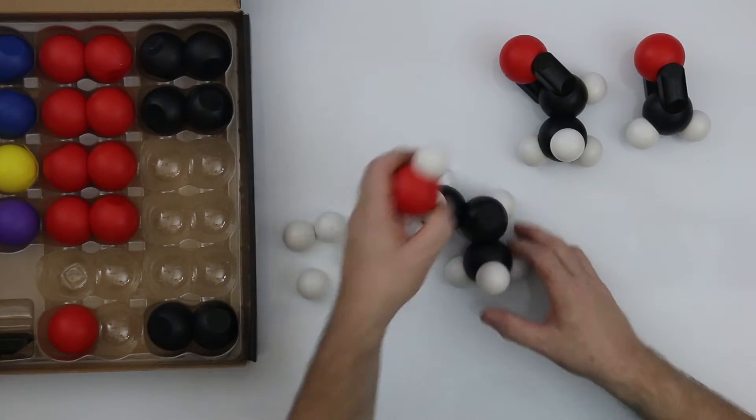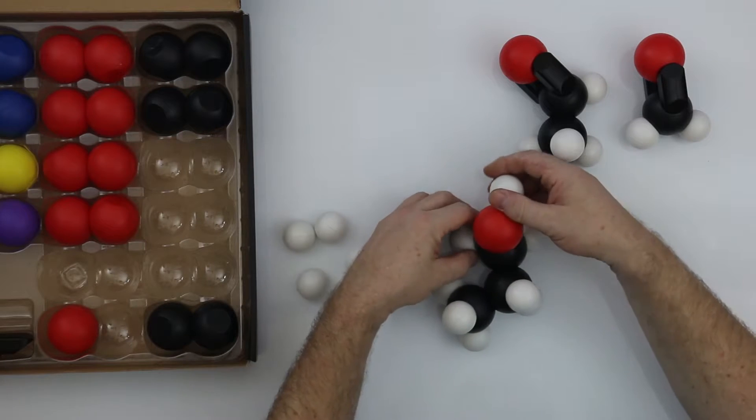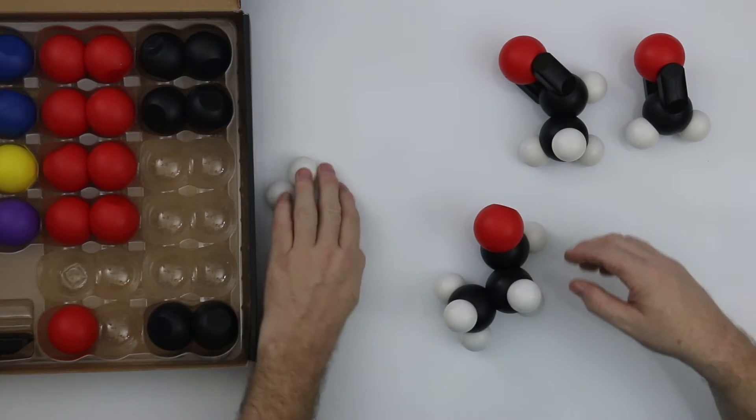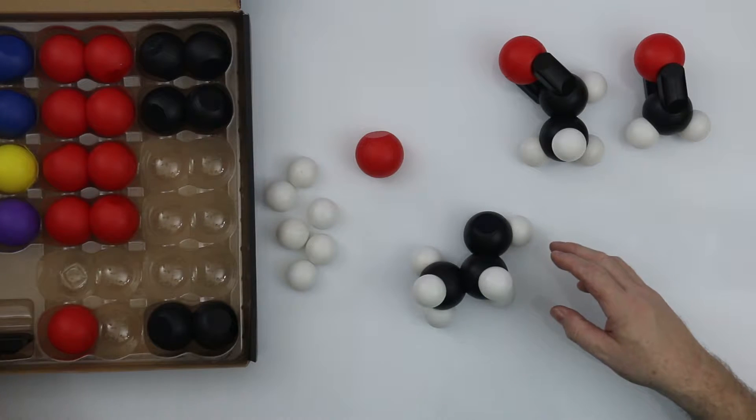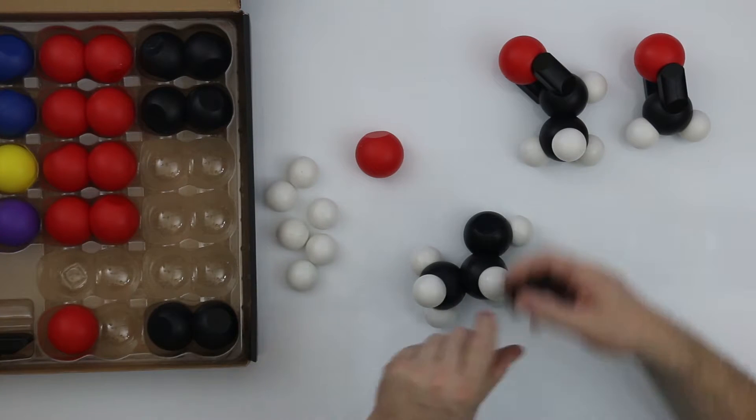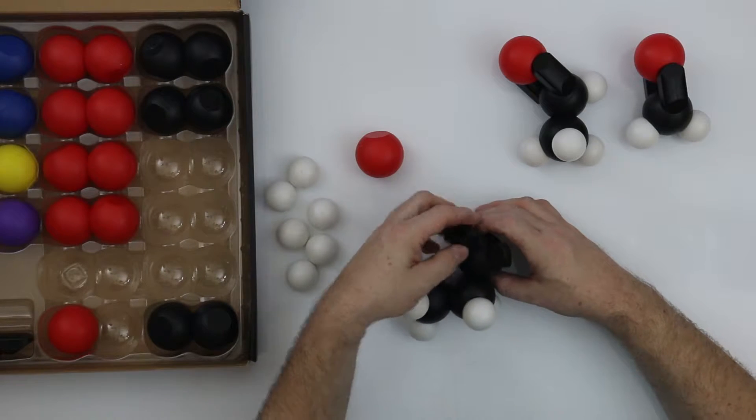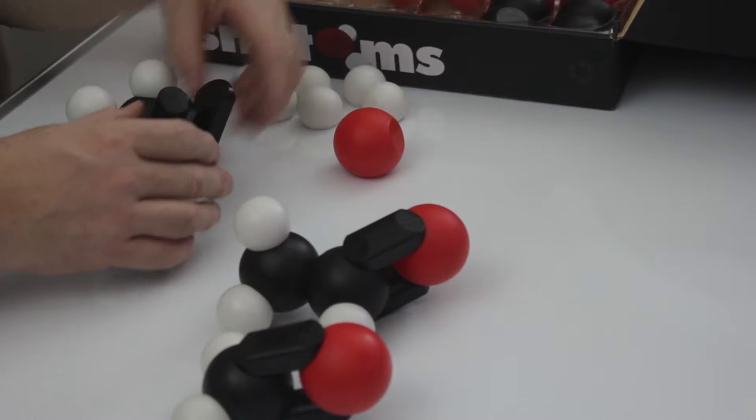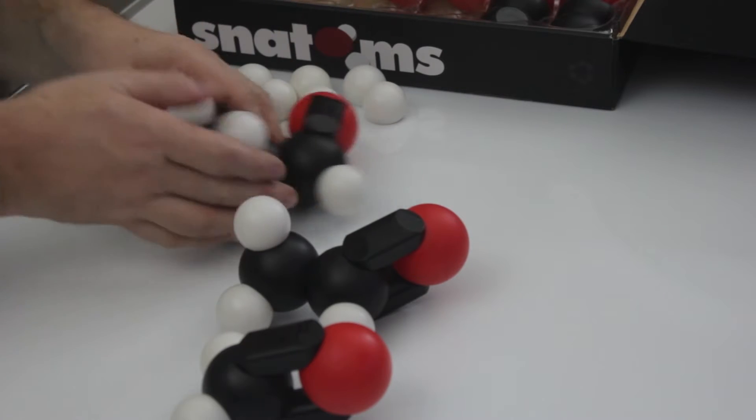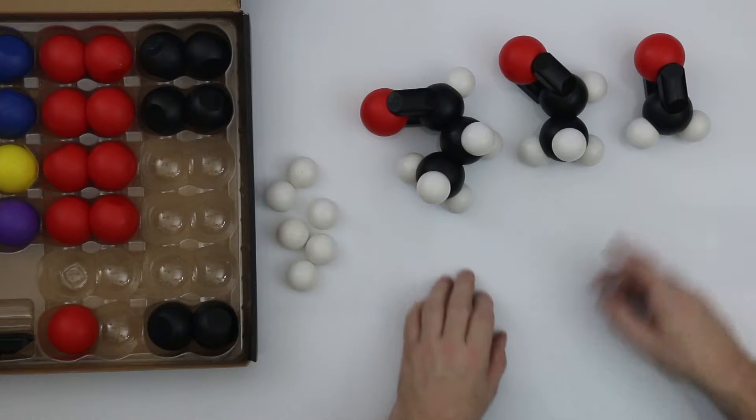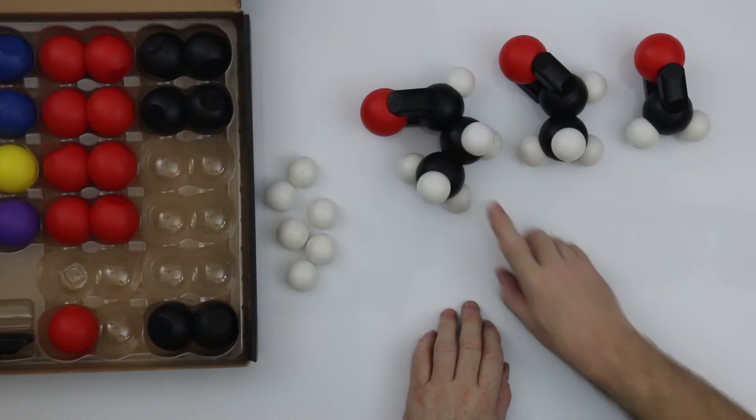And we can do the same with this propane. We've got the propane. We can now put in a double bond here. And this will make propanal. So these are the aldehydes. Methanal, ethanal, propanal.